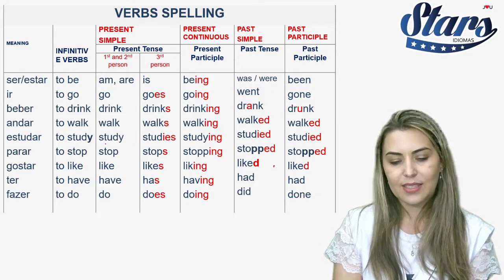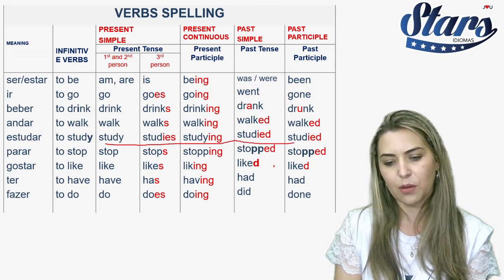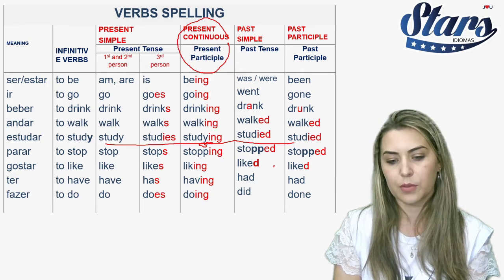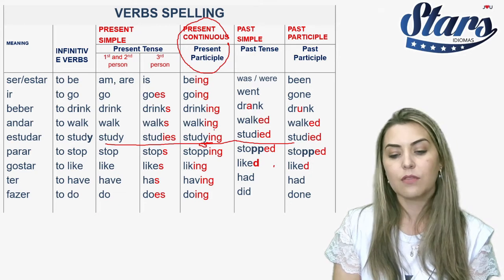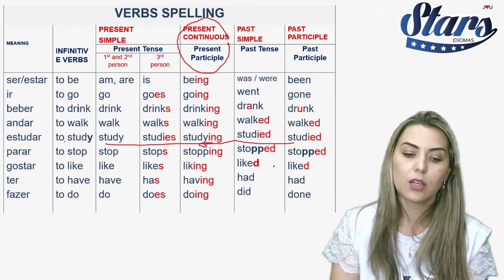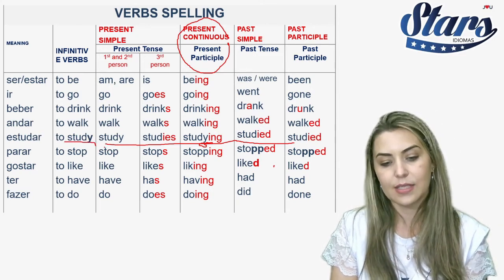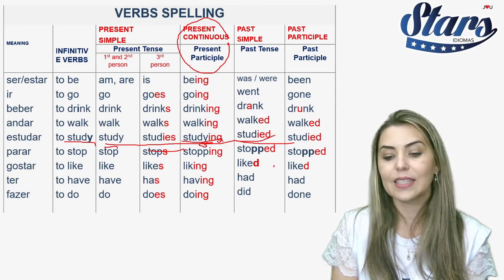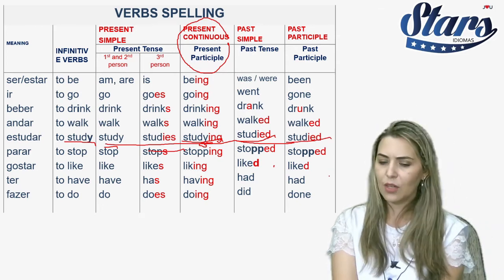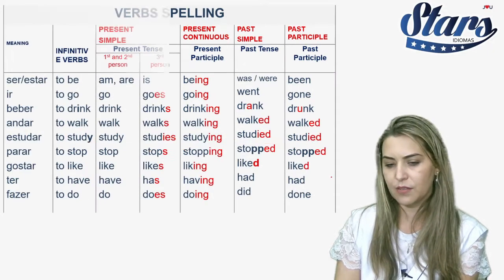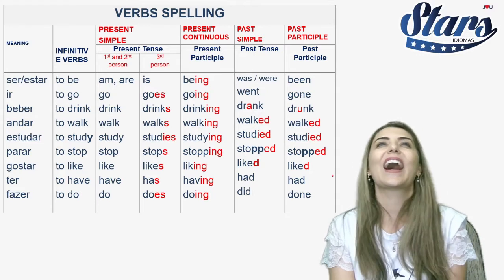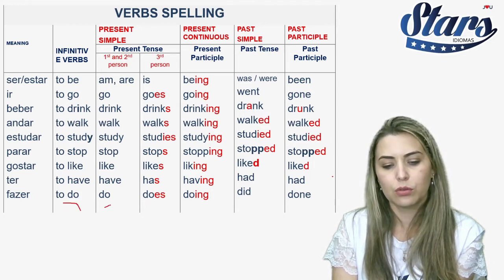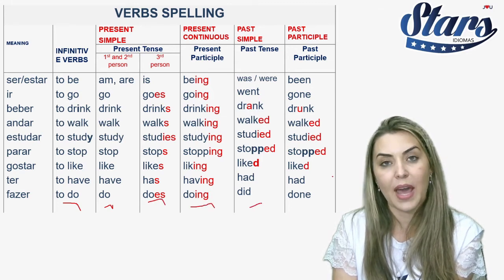Now look at the verb 'study' — I like to talk about 'study' because students are often confused. When you do the spelling of 'study' in the present continuous, you do not remove the 'y' — it's 'studying.' But you do remove the 'y' for the third person of the present simple: 'studies.' And also in the past simple: 'studied.' Past participle is also 'studied.' Now look at 'do': does, doing, did, done.